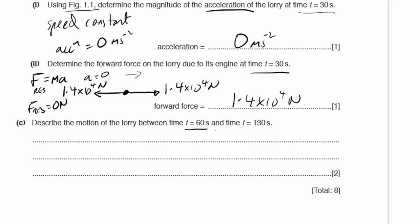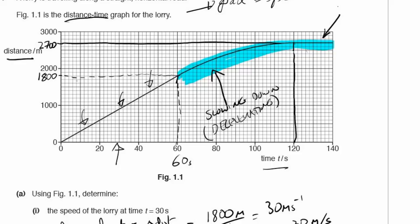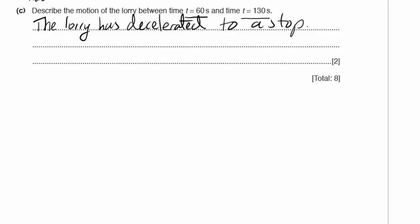Describe the motion of the lorry between t equals 60 seconds and t equals 130 seconds. Looking at the graph during this section: first it is slowing down — decelerating. Then the distance stops changing, so it has stopped. The lorry decelerates to a stop. There are likely two marks: one for decelerating, one for stopping.